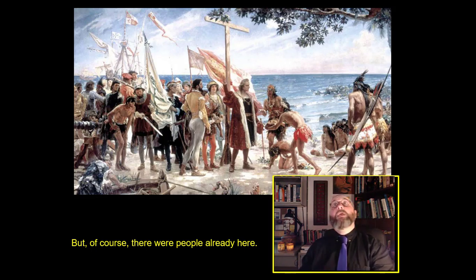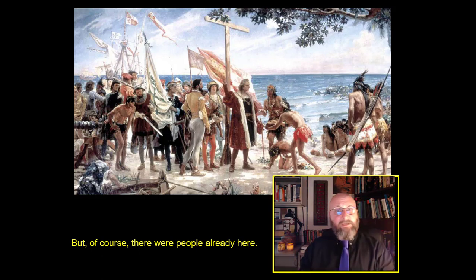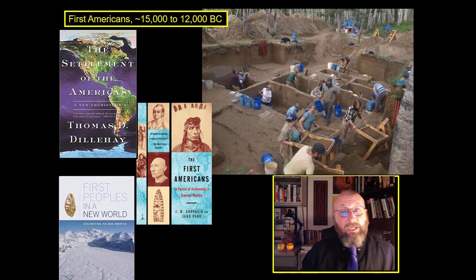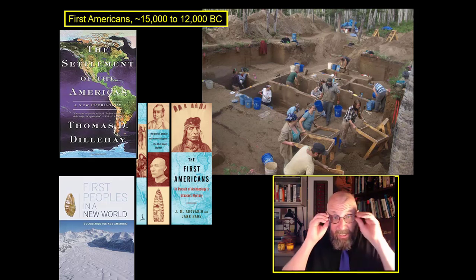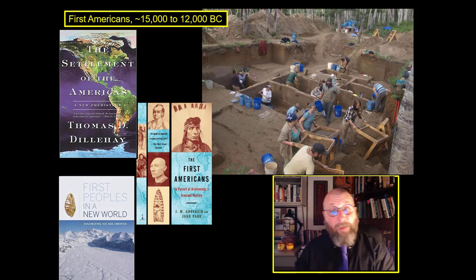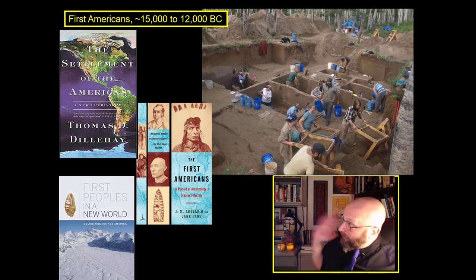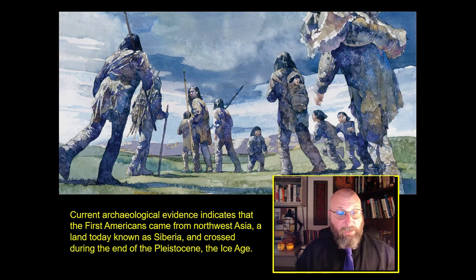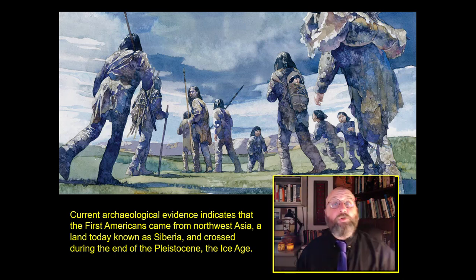So where did these people actually come from? People thought maybe they were a lost tribe of Israel, a lost son of Noah, or birthed from the Earth itself. But the archaeology says that the very first Americans come from the end of the Ice Age, from Northwest Asia — an area called Siberia — and they crossed into the Americas during the end of the Ice Age, a period known as the Pleistocene.